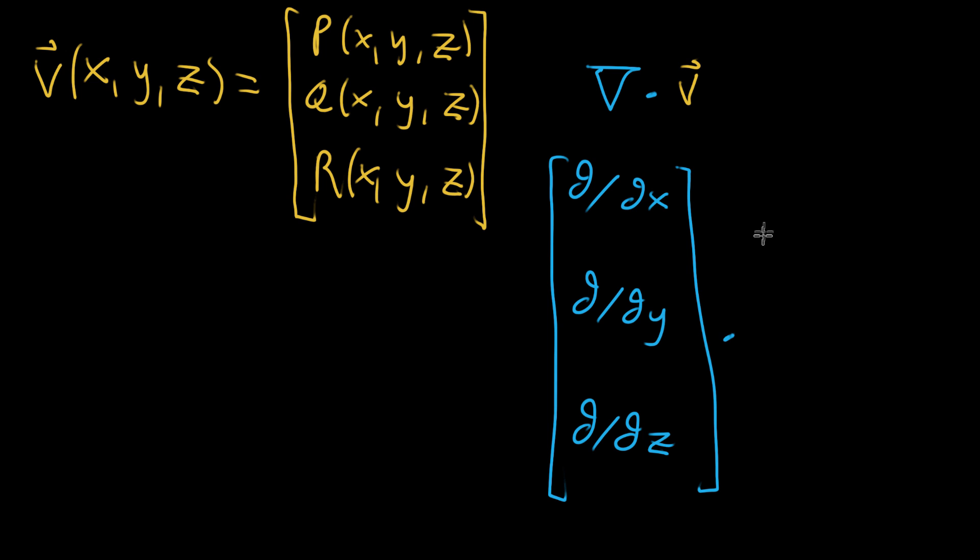And when you imagine taking the dot product between this and your p as a function, q as a function, and r as a function, vector-valued output...